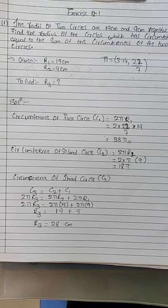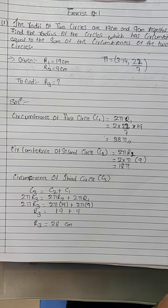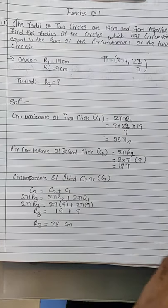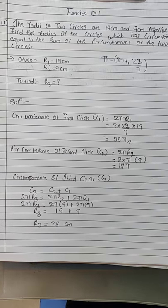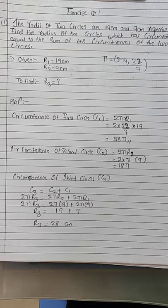So we can conclude that in this type of sum — wherever we have multiple circles and we add their circumferences to get a new circle's circumference and find its radius — we simply add all the radii. Whatever value we get, that is the radius.